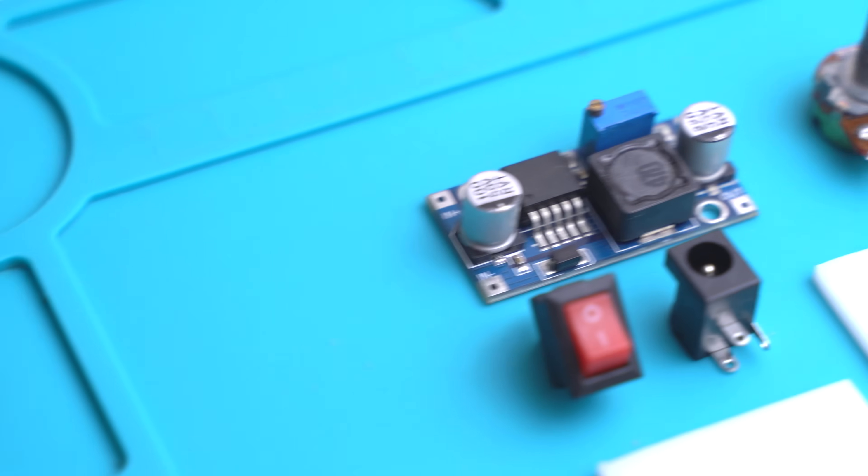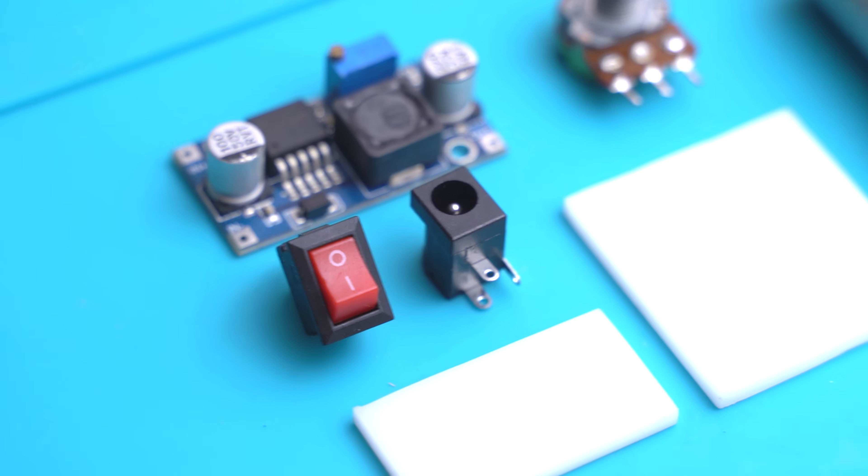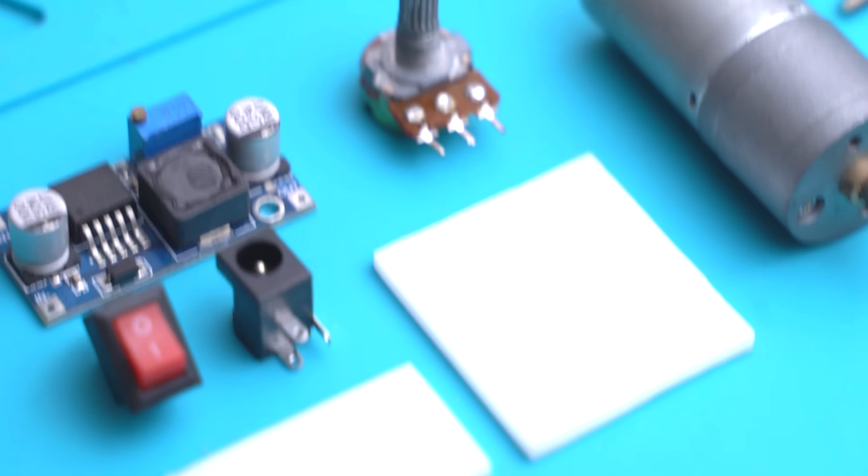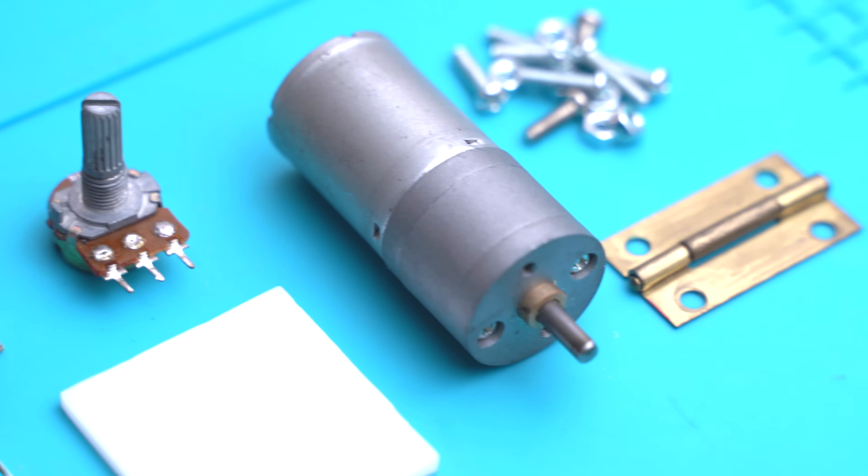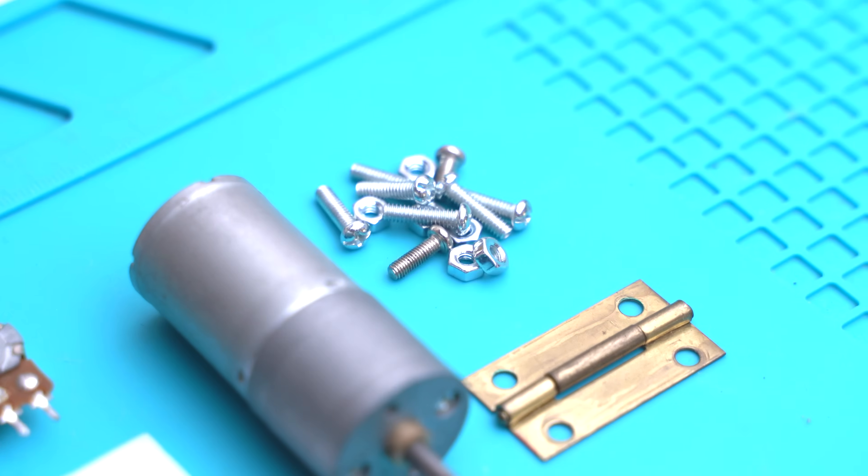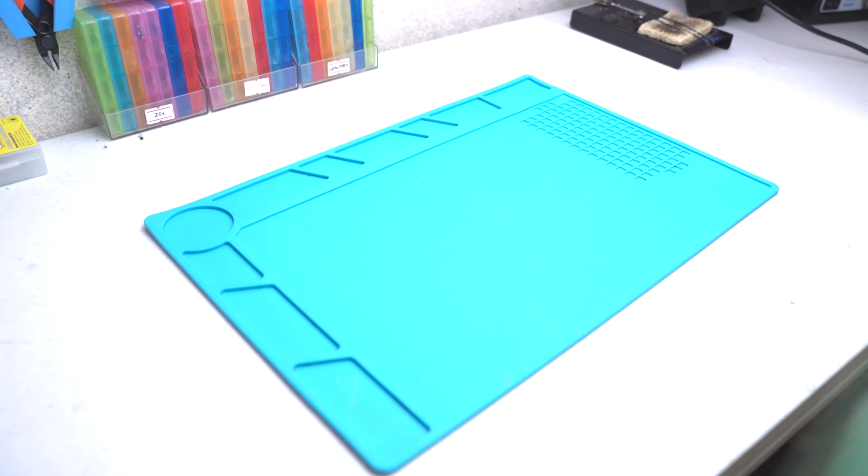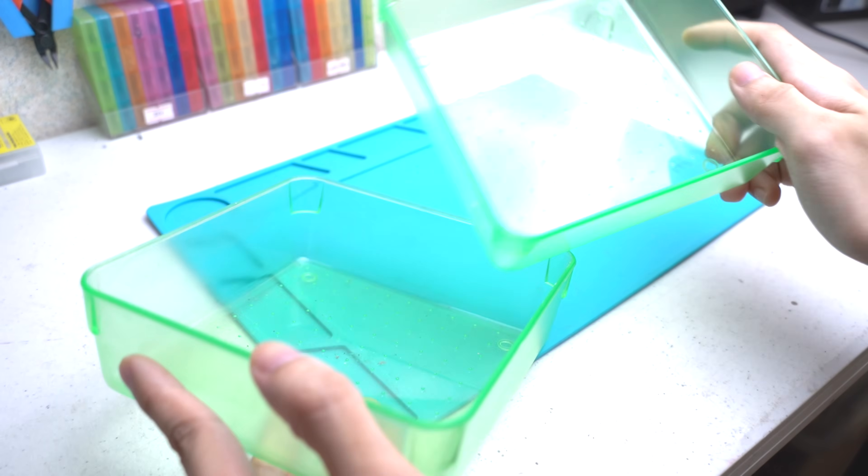Let's start with the things you will need. You'll need a DC to DC converter for controlling the motor speed, a switch and a DC jack, two scrap pieces of wood or acrylic, a 10k ohm potentiometer, a gear motor, some screws, and a hinge. For the project's enclosure, I'm using two plastic container trays.